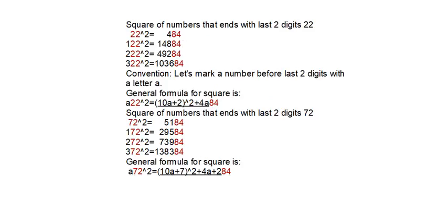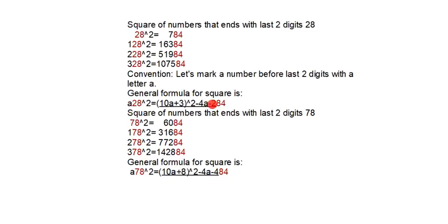Similar to the previous video, for the square of numbers that end with last two digits 72, here is the general formula for the number before last two digits. And here also, as you can see, here is the difference.